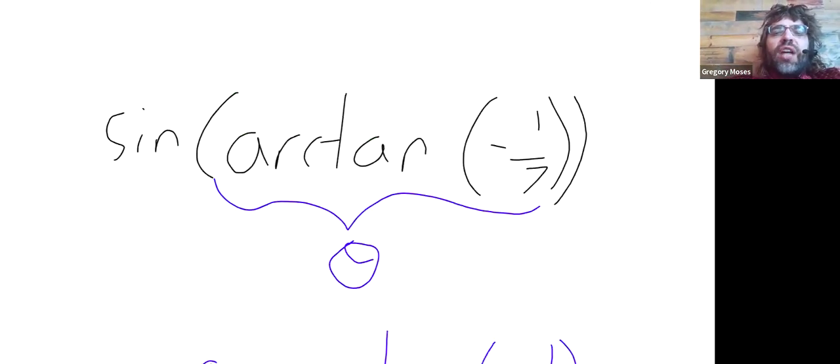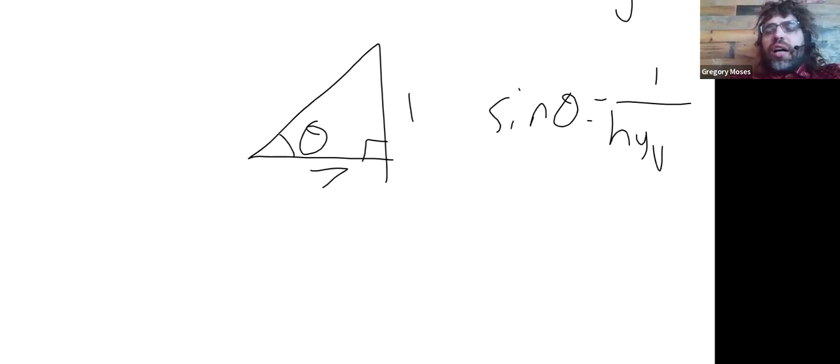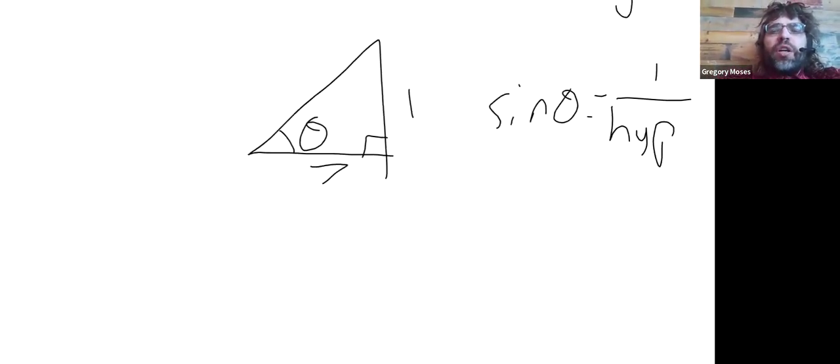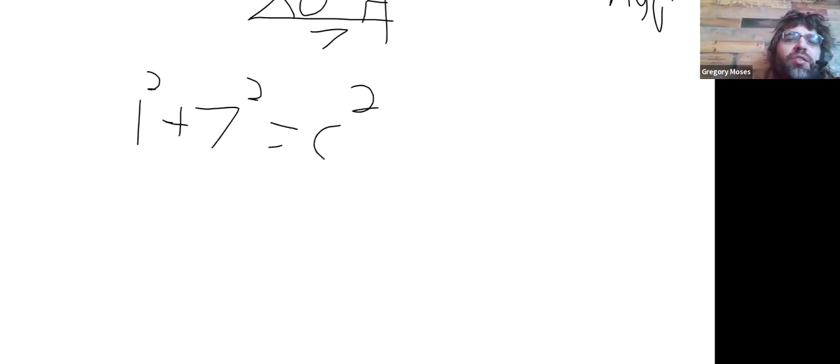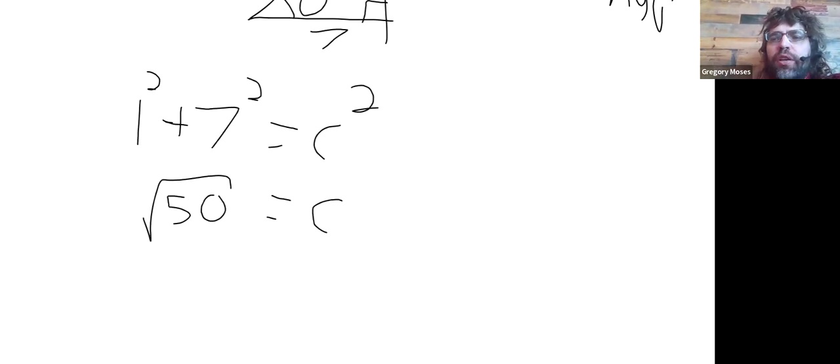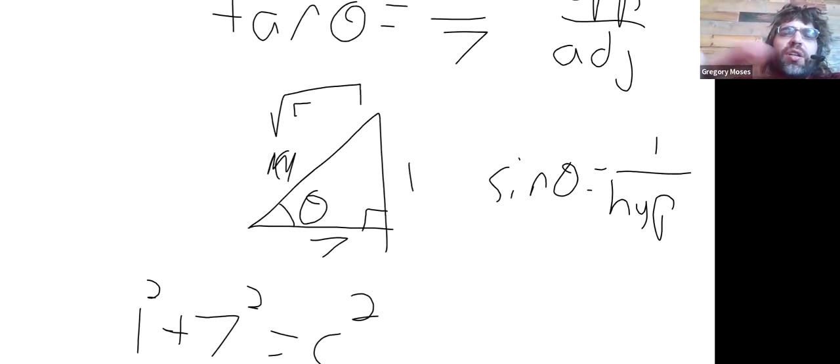And now we want the sine of this angle. It's the opposite over the hypotenuse, and we don't know the hypotenuse, but the Pythagorean theorem comes through. And we get the square root of 50. That's five times the square root of two, but I'm not going to bother simplifying this. I'll just write down the square root of 50.